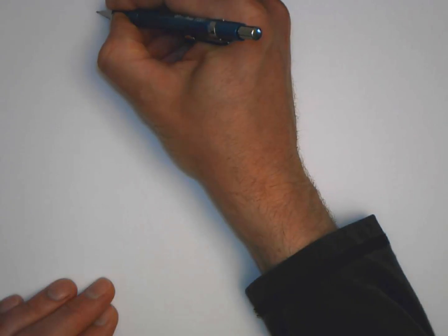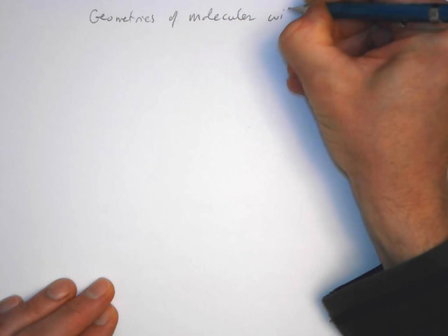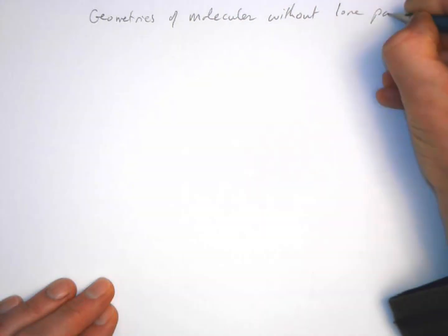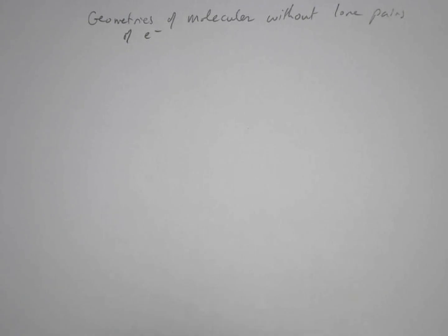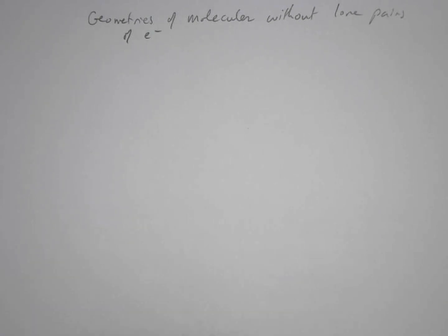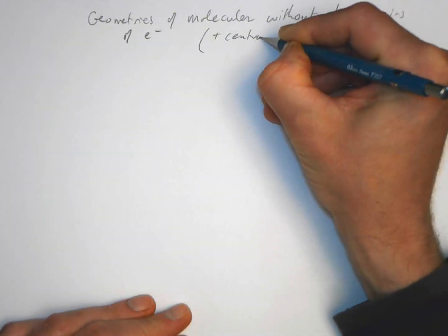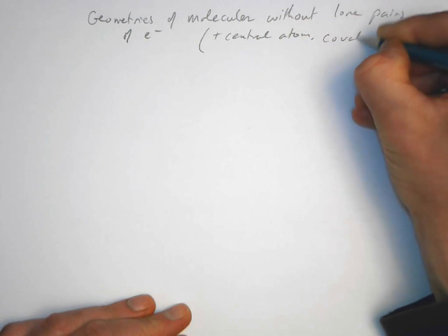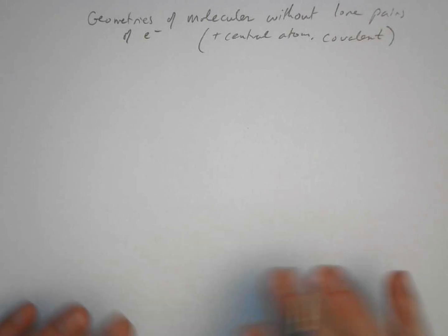We'll look at more detail about what this means for molecular structures as we go. For now, let's think about geometries of molecules without lone pairs of electrons — specifically central-atom covalent molecules with no non-bonding pairs.